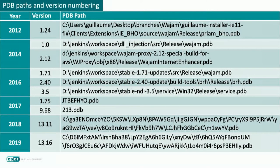Here are some example version numbers and PDB paths we collected over the years. Some are very explicit, like 'WAJAM proxy' or 'DLL injection'. Interestingly, from 2017 when the company was sold, the PDB paths started to be random characters. The most recent versions from 2018 and 2019 are even more random and seem to follow a specific pattern, suggesting possible automatic obfuscation. The version numbering suggests many versions, but we only observed versions 1, 2, 3, 9, 11, and 13.